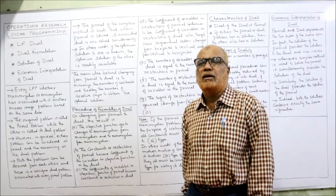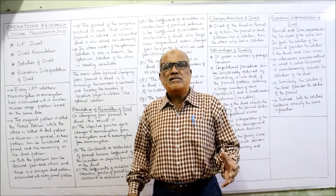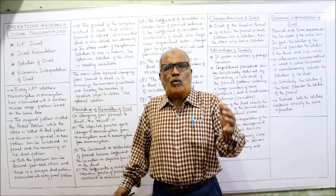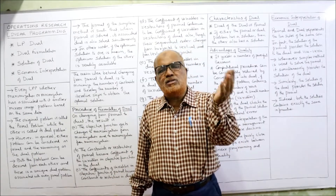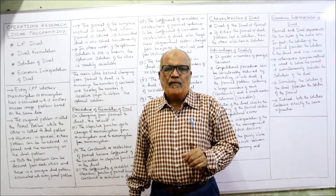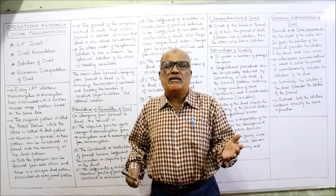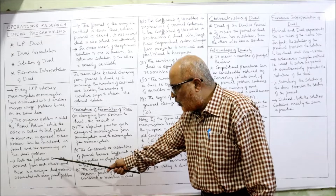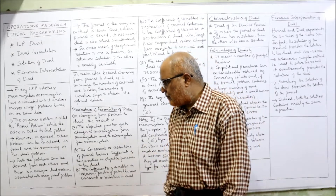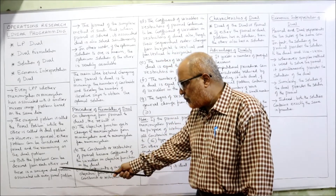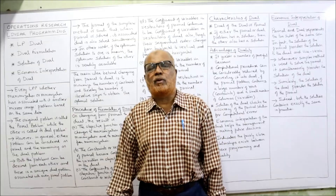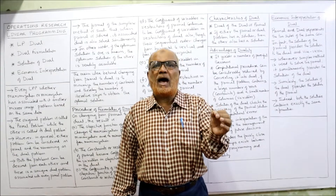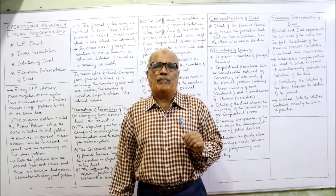However, in general either problem can be considered as primal and the remaining problem as dual. It is not necessary that the original problem will always remain the original — we can treat the original problem as dual and its dual will become primal. Any problem can be treated as primal or dual, and both problems can be derived from each other. There is a unique dual problem associated with every primal problem.